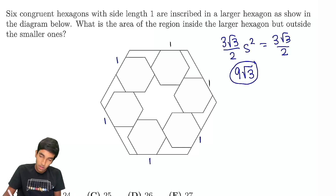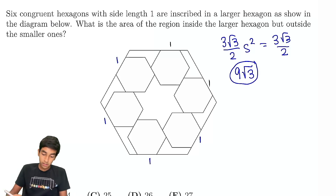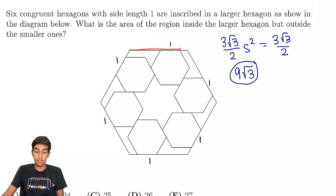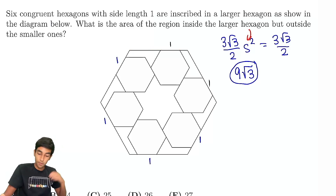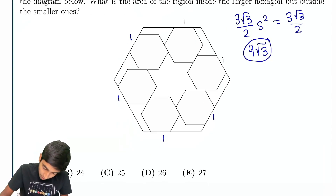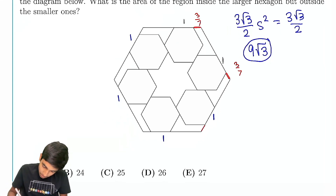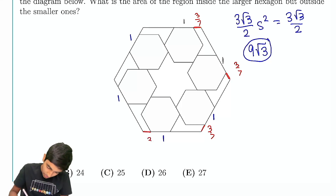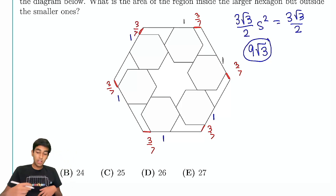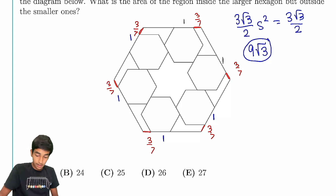Now for part 2, the hard part: finding the area of the big hexagon. That's basically equivalent to finding the side length of the big hexagon and plugging it in. We're also given another condition — the distance between adjacent smaller hexagons is 3/7. This distance of 3/7 is given throughout the problem, and we have to somehow find the side length of the large hexagon.